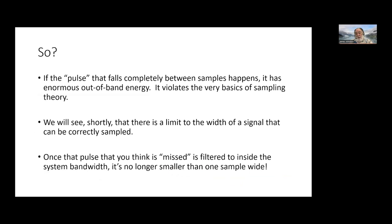What happens if we make the pulse a little bigger? This is why you cannot fall between samples — anything that falls completely between two samples has an enormous bandwidth, many times the sampling frequency. When you limit the width of the signal, that changes the bandwidth. But once you filter the one-sample pulse, you see the impulse response of the filter — much wider than one sample. You only observe the part that has energy inside your passband.